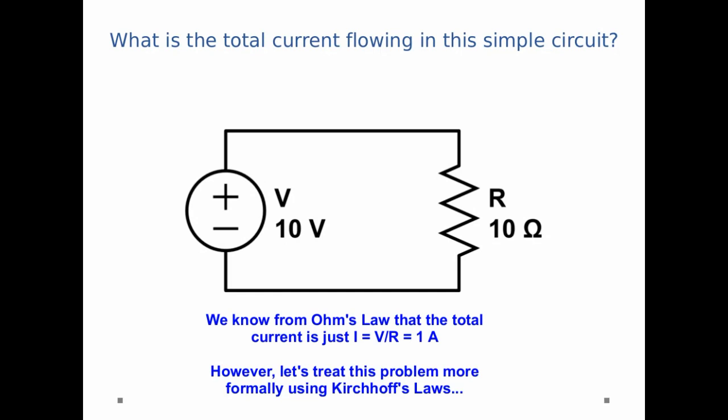We know from Ohm's law that the total current in the circuit is just I equals V divided by R, which is just 1 amp. However, let's treat this problem a little bit more formally using Kirchhoff's laws.